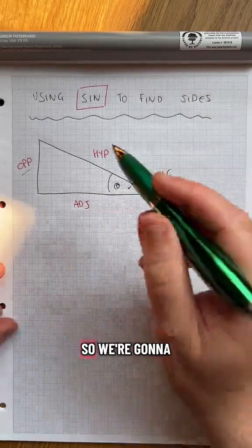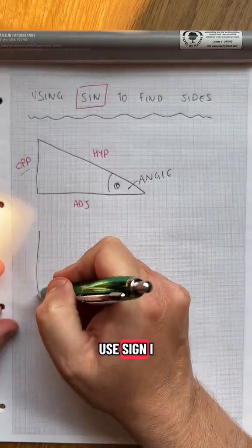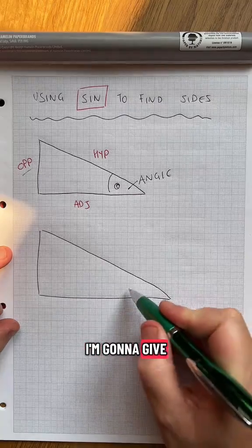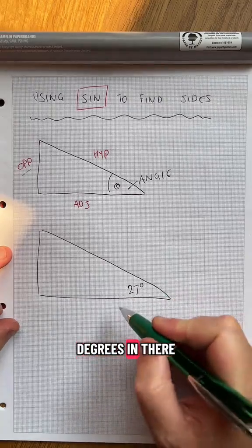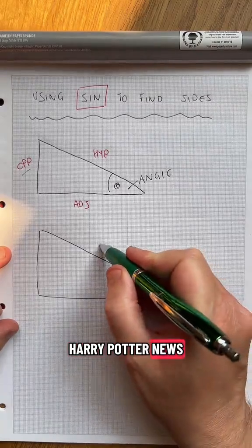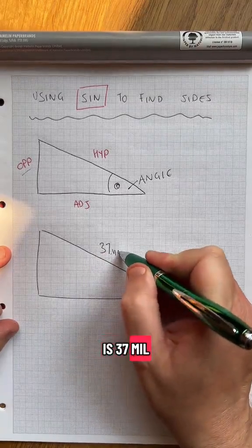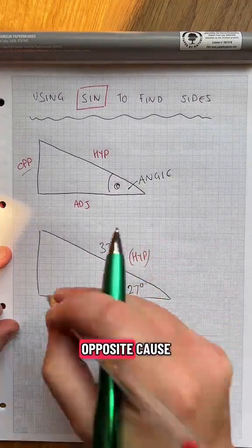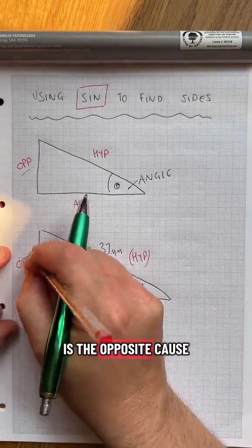And this one's the important news because it's the longest side. So we're going to use sine. I can draw you a triangle something like that, not to scale. I'm going to give an angle 27 degrees in there. Let's say the hypotenuse is 37 mil. So this is hypotenuse, and then this angle is the opposite because, sorry, this side is the opposite because it's opposite the angle.